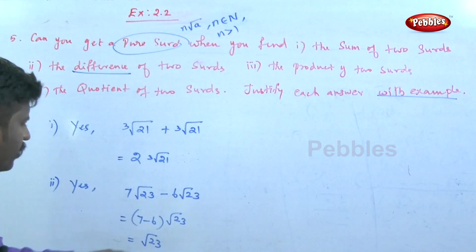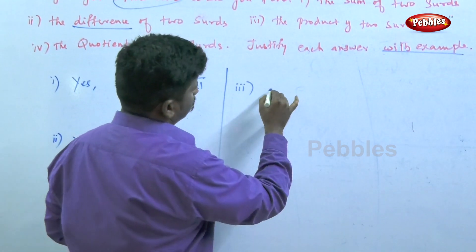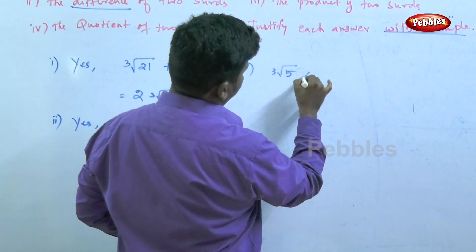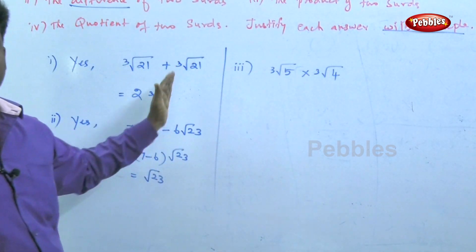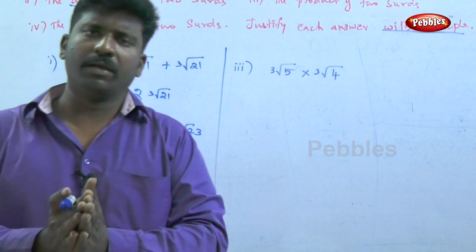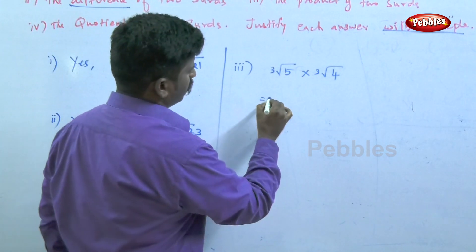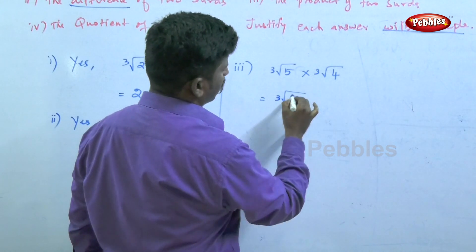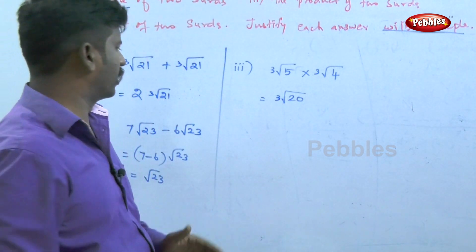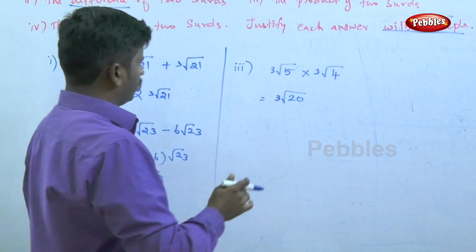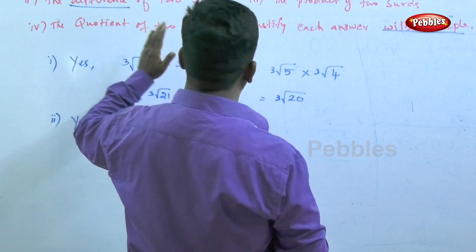The third point — product of two surds: cube root of 5 multiplied by cube root of 4. These are two surds. Cube root of 5 times cube root of 4 equals cube root of 20. The cube root of 20 is also a surd number.